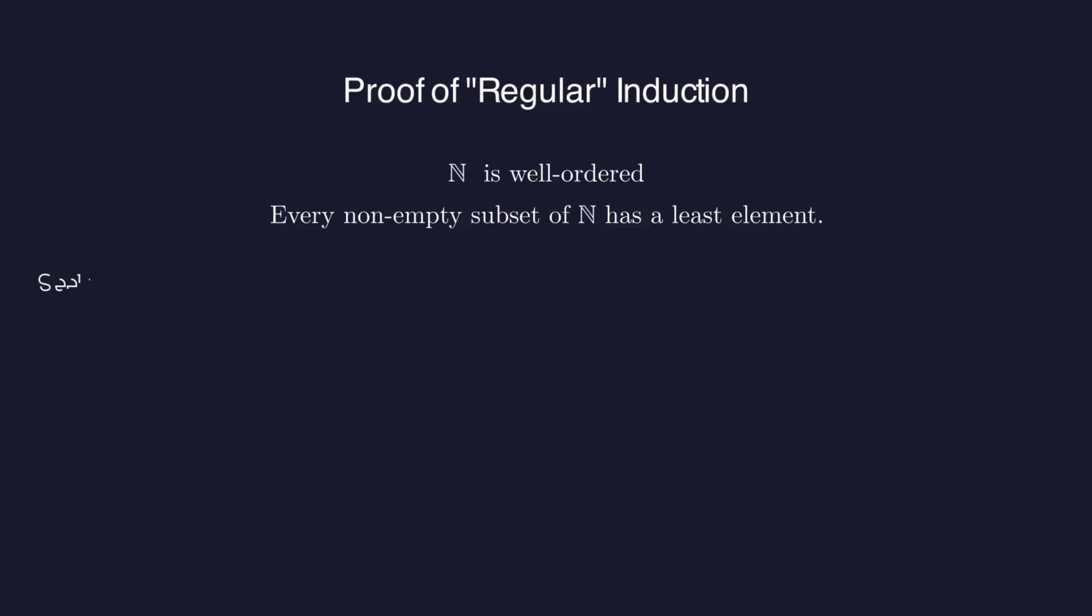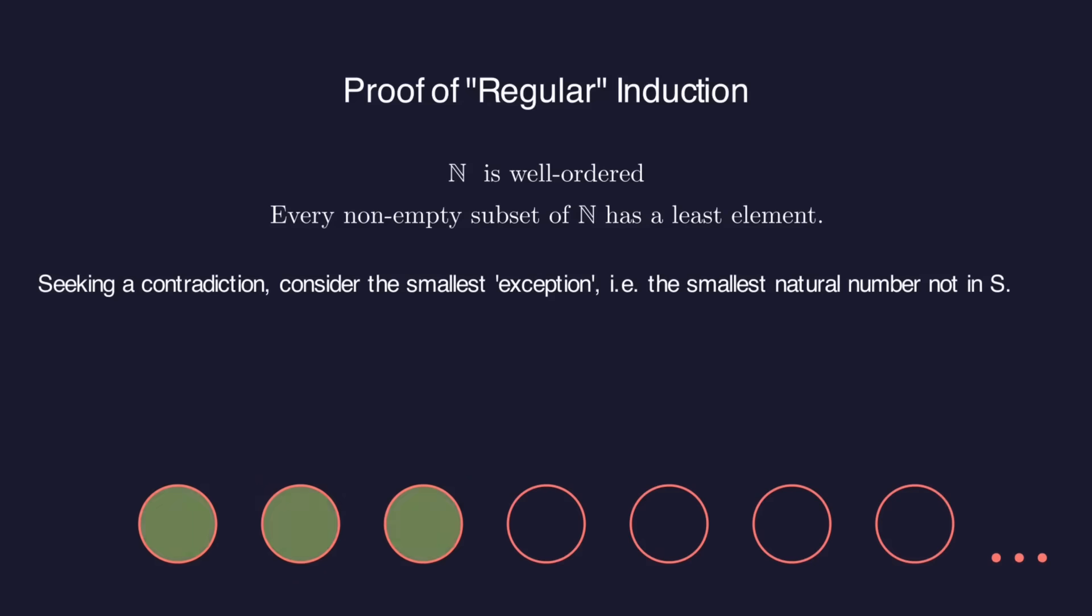If s does not consist of all the natural numbers then the set of exceptions must be non-empty and we can look at the smallest exception. That exception can't be one, since we already know that one is a member of s.